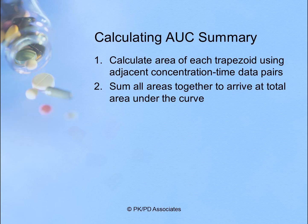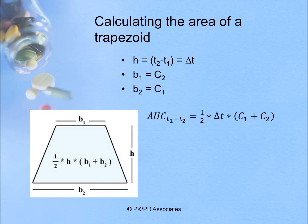In summary, to calculate the AUC, you calculate the area of each trapezoid using adjacent concentration time data pairs, and then sum all of those areas together to arrive at a total area under the curve.